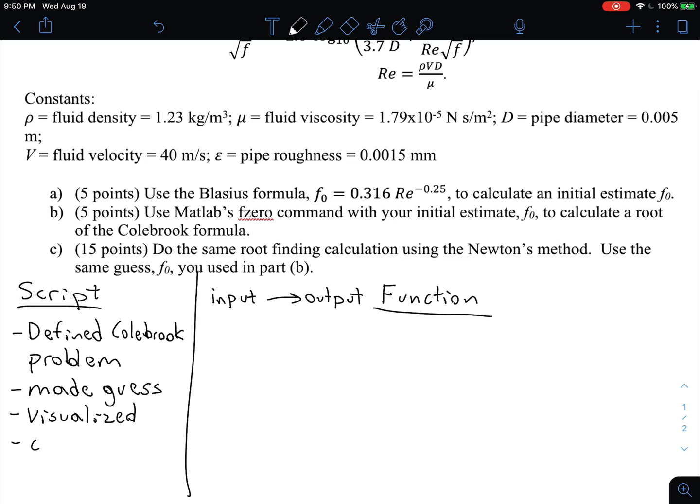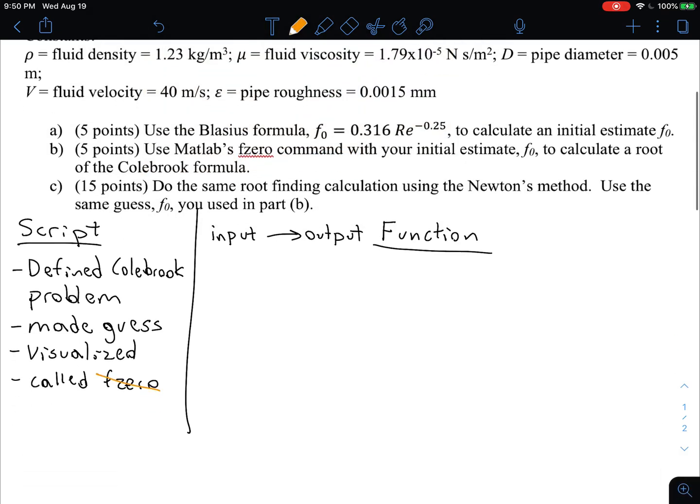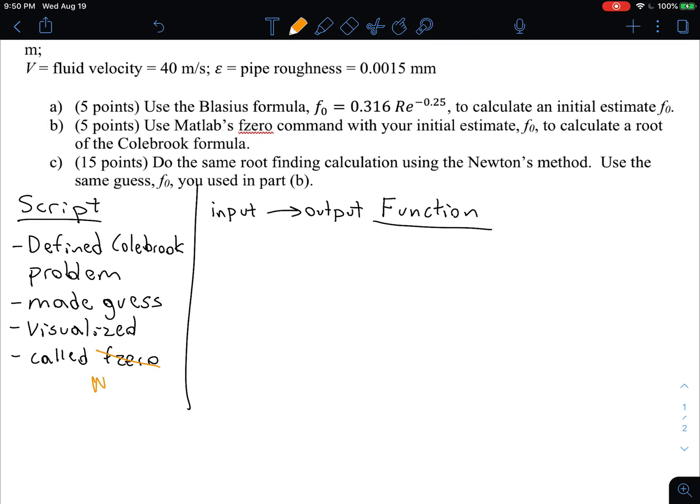And finally, we called F zero. Notice that F zero is a function. It's a built in function for MATLAB. We didn't have to write it. And it's really the code that did the work. So the script defined the problem and made a nice plot, but it didn't actually calculate the solution. So what we are going to do right now is we are going to replace F zero with Newton's method.